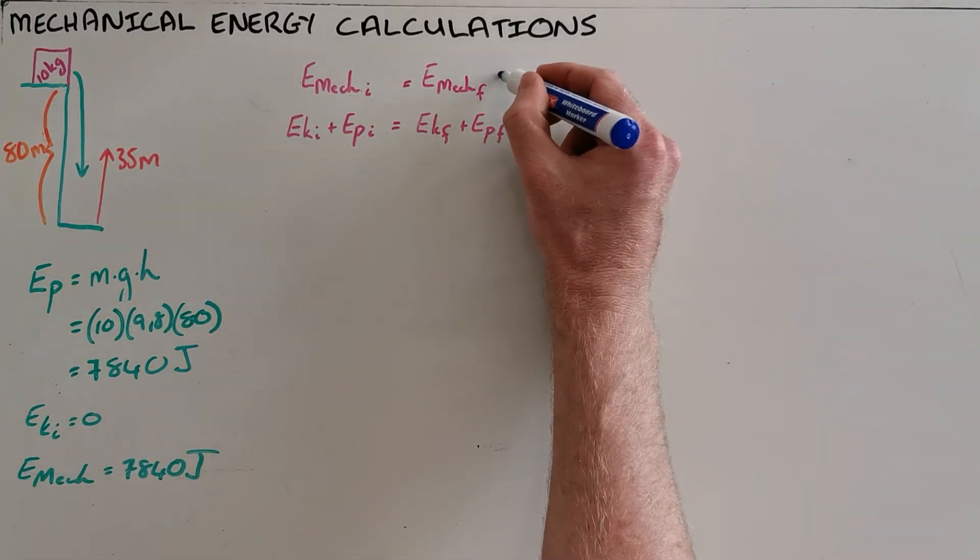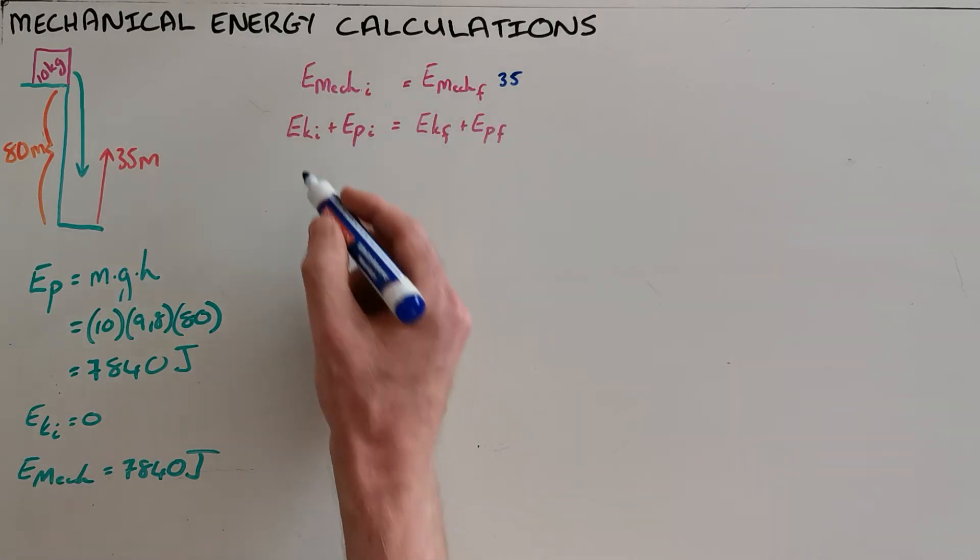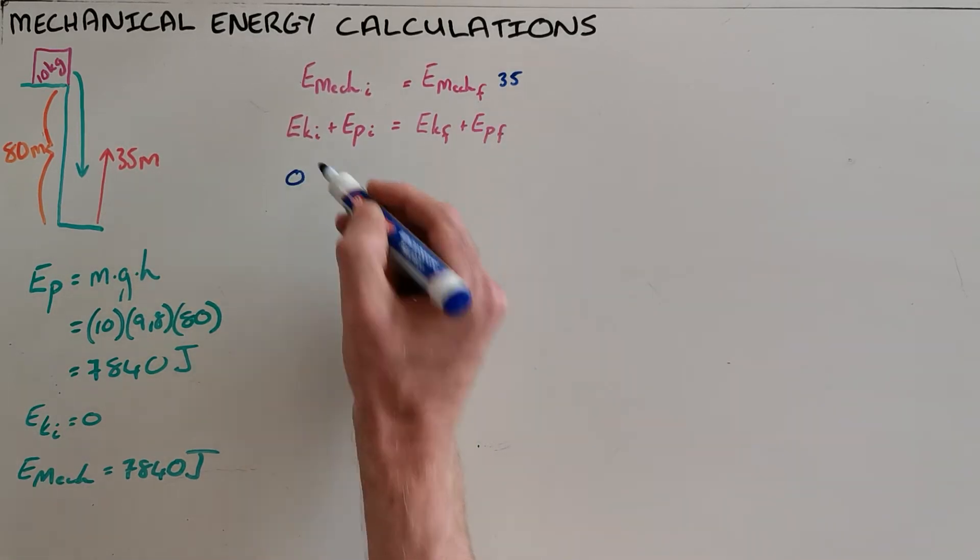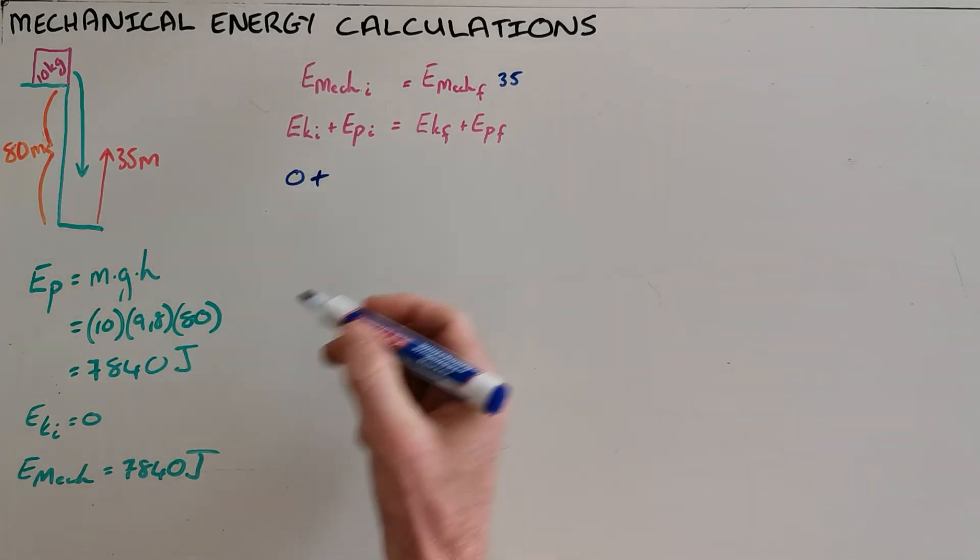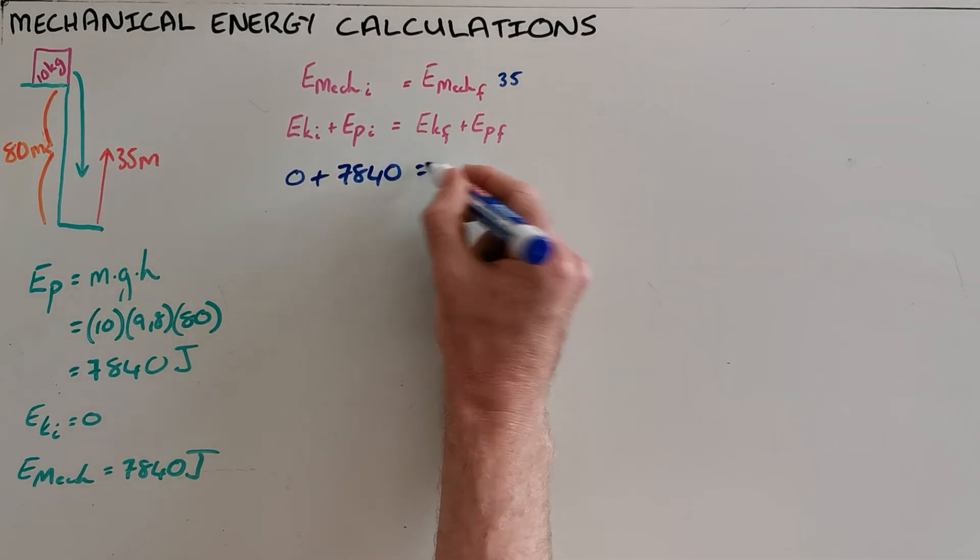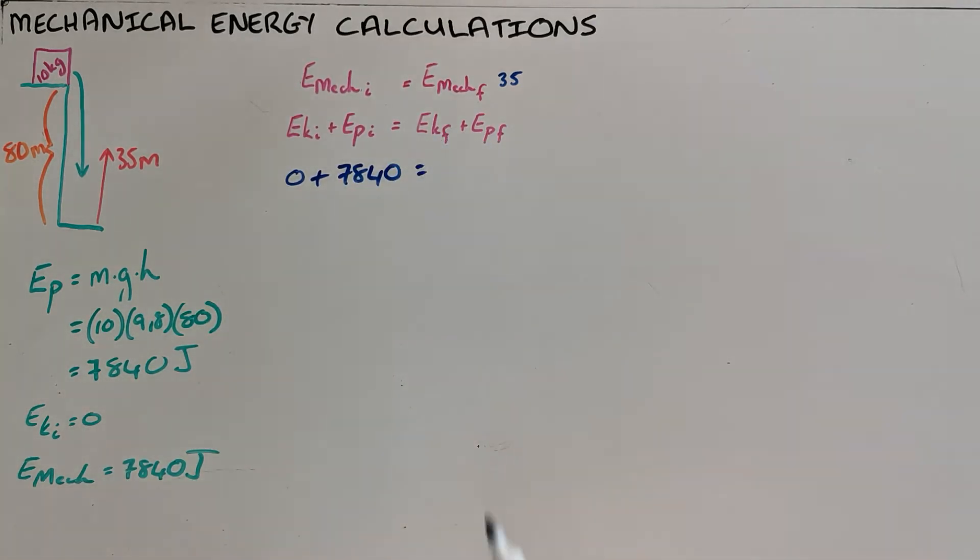We answer that question by realizing that the mechanical energy at the start must be equal to the mechanical energy at 35 meters. As a result we can say that since we know at the start the kinetic energy was zero...